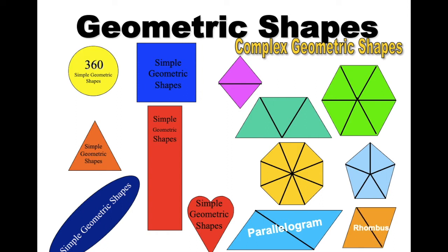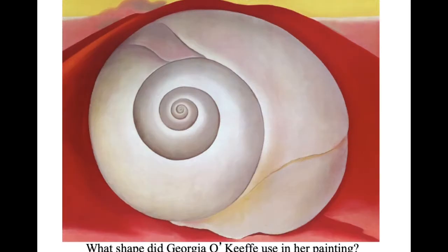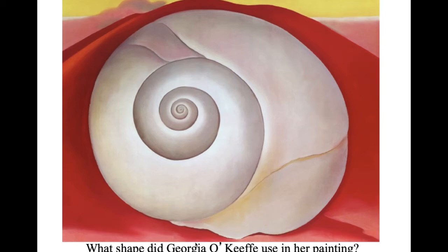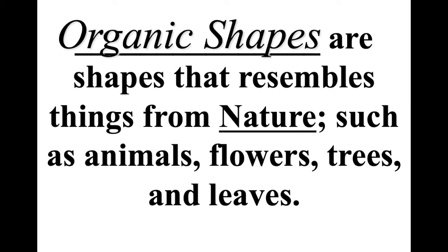Those are the geometric shapes we use most often — there are more, but if you can get these, these are the ones we discuss the most. What shape would you consider this seashell? What shape did Georgia O'Keeffe use in her painting? Is it a perfect circle? No, it's not a perfect circle, because the bottom of the seashell has this curvy line that makes the circle a little bit more oblong. So what do you call shapes that resemble things from nature? Let's talk about the second group of shapes.